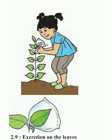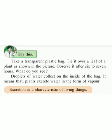Try this — this experiment I showed you in my video. Take a transparent plastic bag and tie it over a leaf of a plant as shown in the picture. Observe it after six to seven hours. What do you see? Droplets of water collect on the inside of the bag — droplets means chhoate chhoate sushma karna alelas dat paanay chi, a plastic var. It means that the plant excretes — ushaarjan kela — water in the form of vapour — vafe cha rupa taani ushaarjan kela.